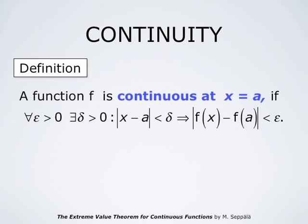We prove this result by reviewing first the definition of continuity. A function f is continuous at x equals a if for all positive numbers epsilon, one can always find a positive number delta, such that whenever the absolute value of x minus a is less than delta, then the absolute value of f of x minus f at a is less than epsilon.